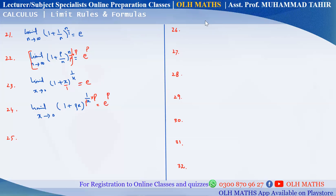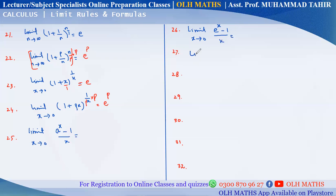Next, we have another well-known formula. Limit x approaches 0 of (a^x − 1)/x. Similarly, limit x approaches 0 of (e^x − 1)/x. And limit x approaches infinity of (a^x − 1)/x. The answer for (a^x − 1)/x as x→0 is the natural log of a.